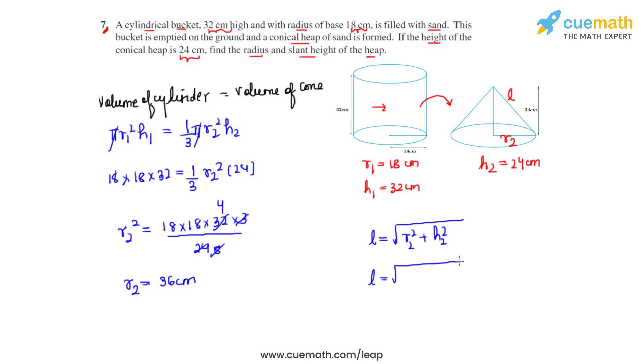So L now will be equal to under root 36² plus 24². So we can take 12² common from it. So 12² taken common, we are left with 3² plus 2².